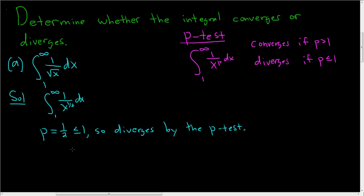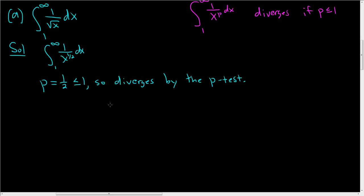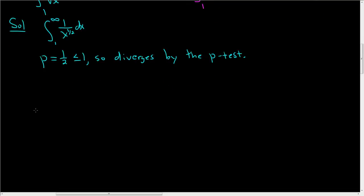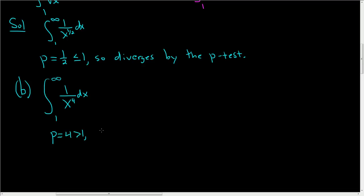Pretty easy problem — just a straightforward application of the p-test. Let's keep going and do more examples, making them progressively a little bit harder. How about the improper integral from 1 to infinity of 1 over x to the 4th dx? Here p is equal to 4, which is bigger than 1, so our integral converges by the p-test.